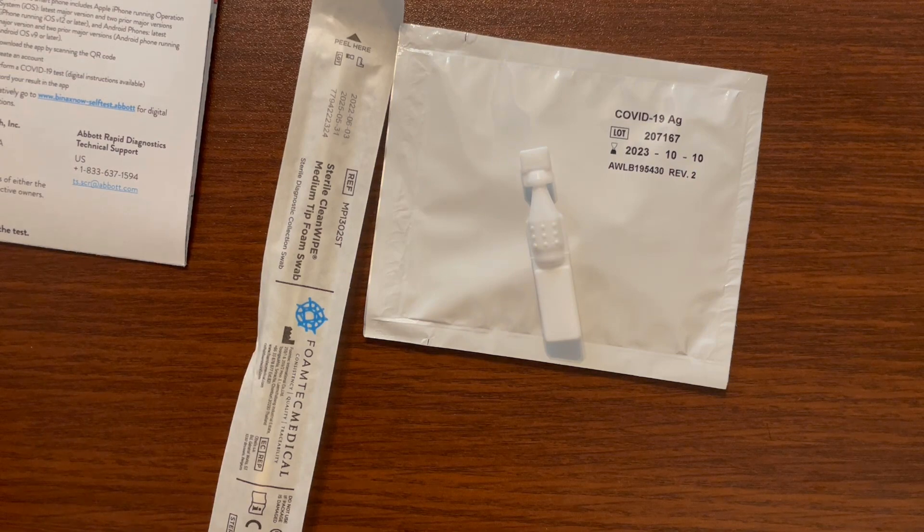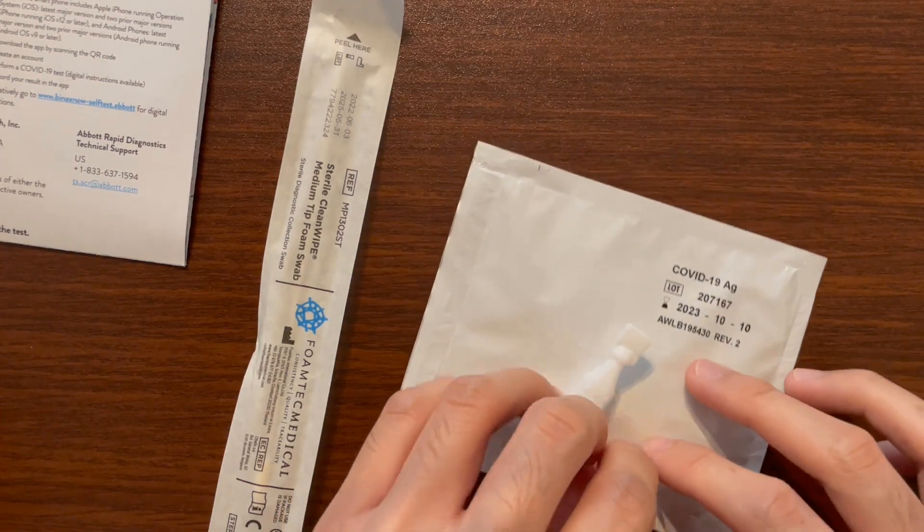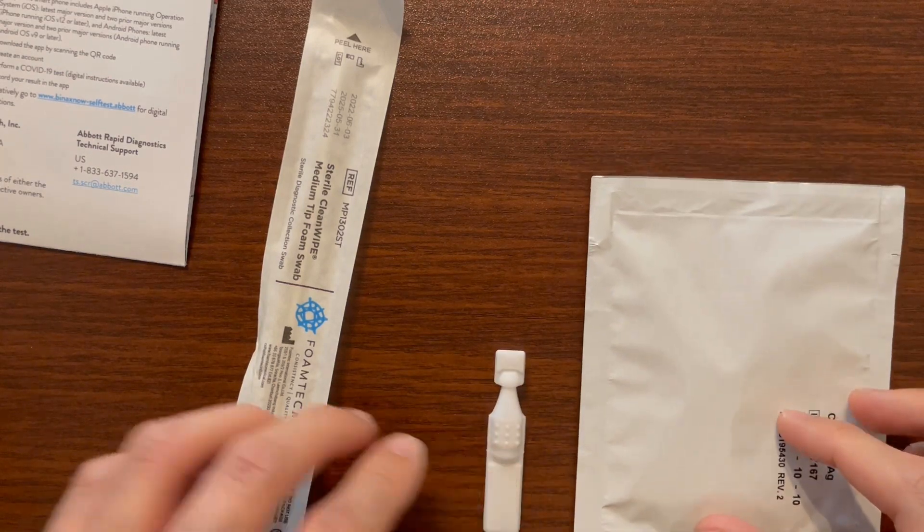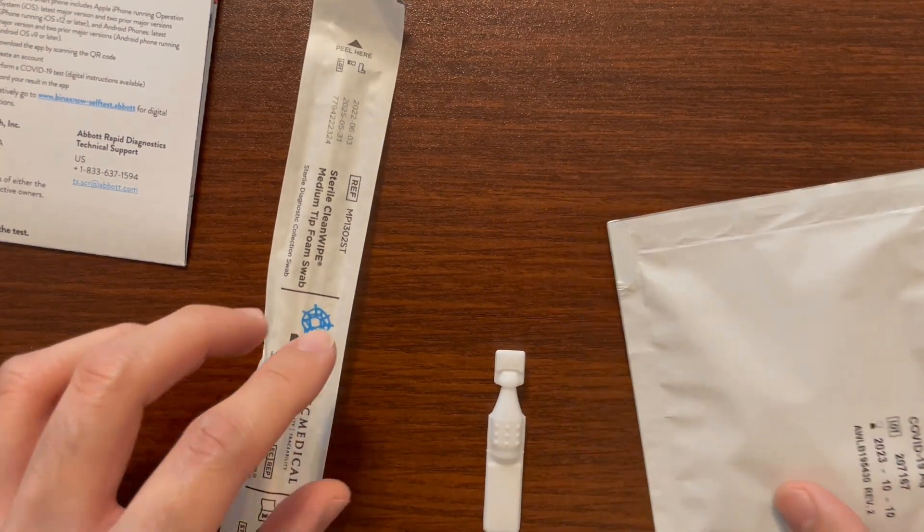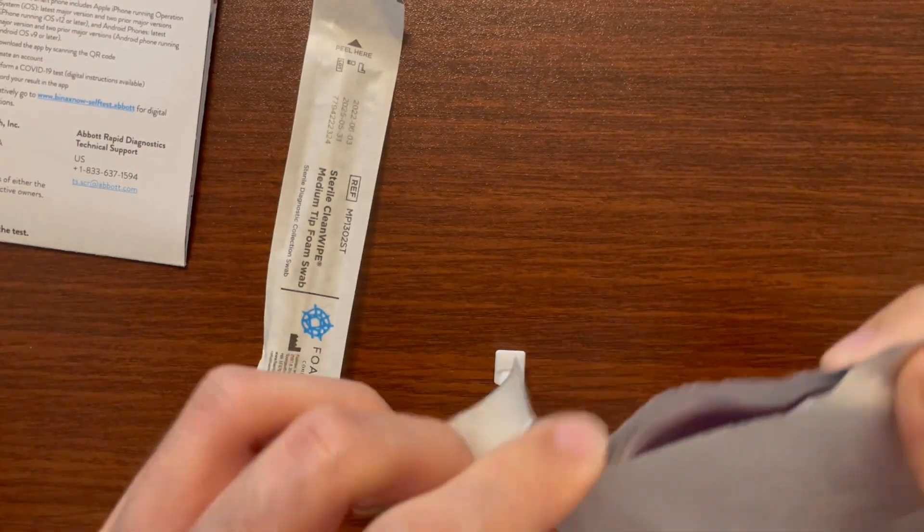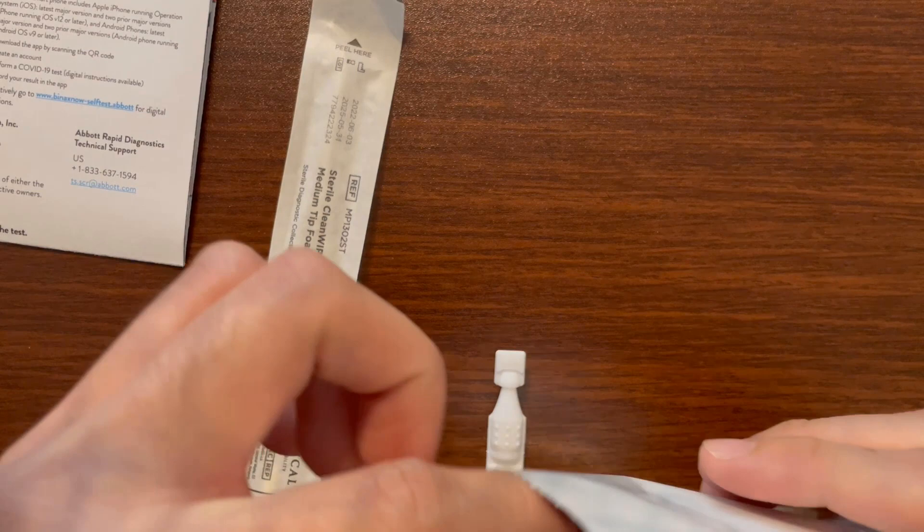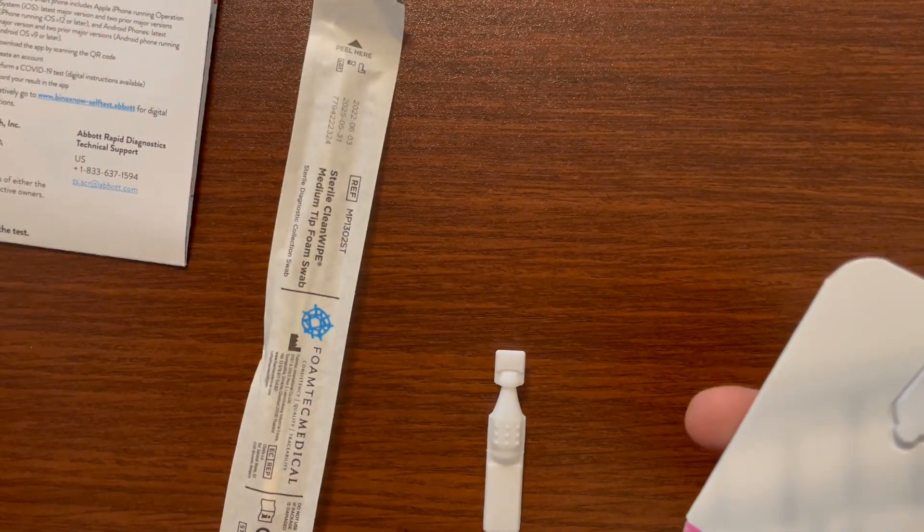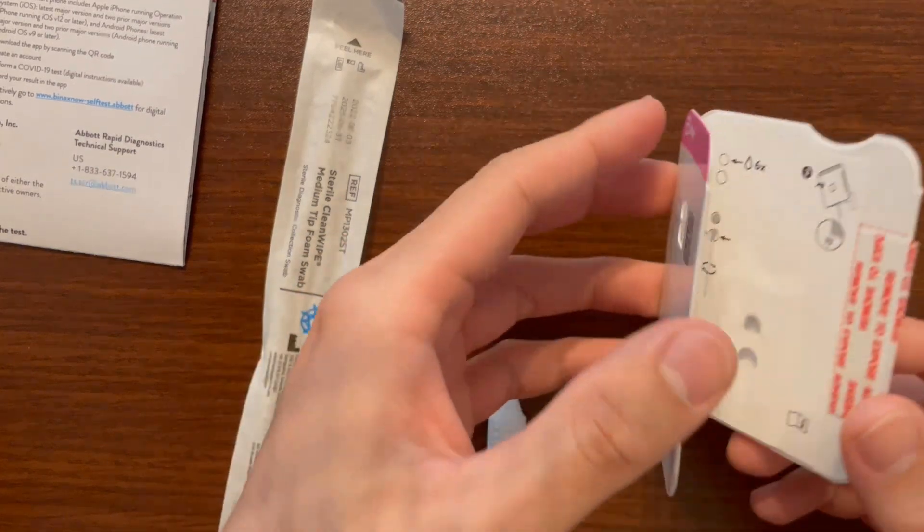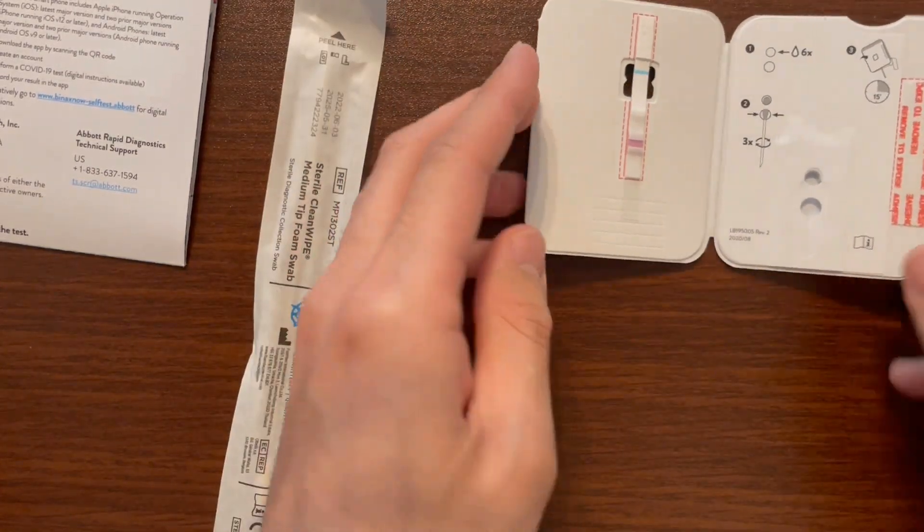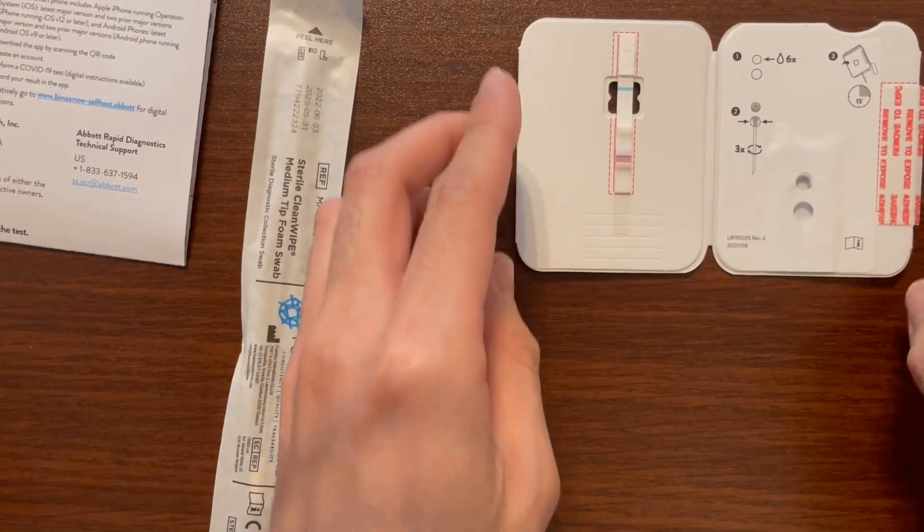The first thing you're going to want to do is wash your hands and make sure that they're dry. We're going to start by removing the test card from the pouch. Take out this test card, set aside the pouch, and open it without touching any of the inside, then lay it flat on the table.